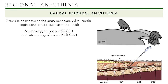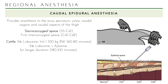To find the sacrococcygeal space, flex or move the tail up and down — you will feel a depression where the index finger is placed. What you need depends on the animal species. For cattle, the dose is 1 ml per 100 kg body weight, lasting 60 to 80 minutes of anesthesia. It can be mixed with xylazine for longer duration — 180 to 210 minutes — at doses of lidocaine 0.22 mg/kg and xylazine 0.03 mg/kg.